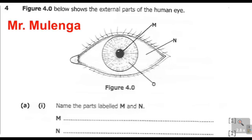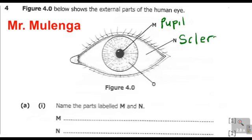When we look at the part labeled M right here, this is the pupil. So the part labeled M is called the pupil. Then the part labeled N right here — this whitish part is called the sclera. This is called the sclera.